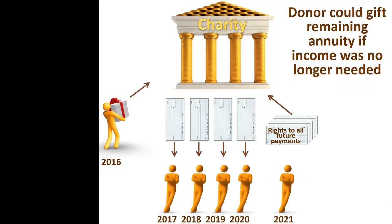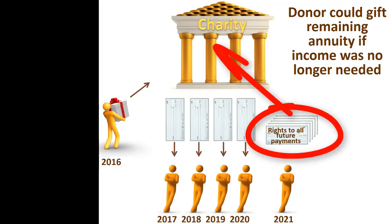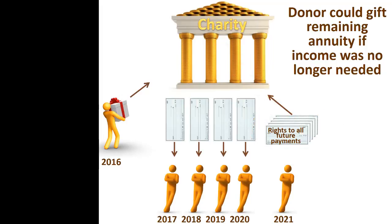If a donor purchased a gift annuity and then later found that he or she no longer needed the annuity payments, the donor could gift the rights to all future payments to the charity and potentially receive an income tax deduction for that gift. This could be more tax-efficient than receiving each check, which counts at least in part as income, and then gifting it back to the charity, which creates a deduction that may or may not completely offset the income, depending upon a variety of factors such as the amount of other itemized deductions, adjusted gross income level, and so forth.